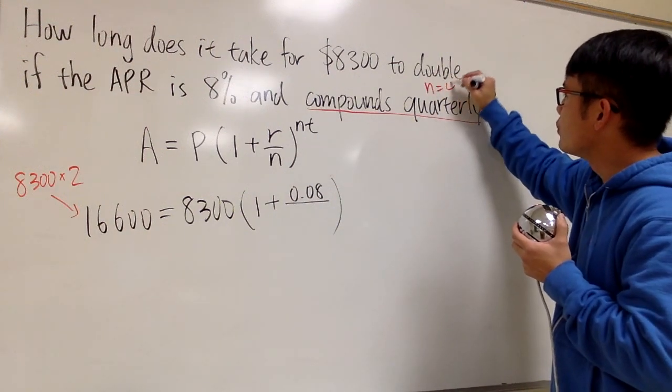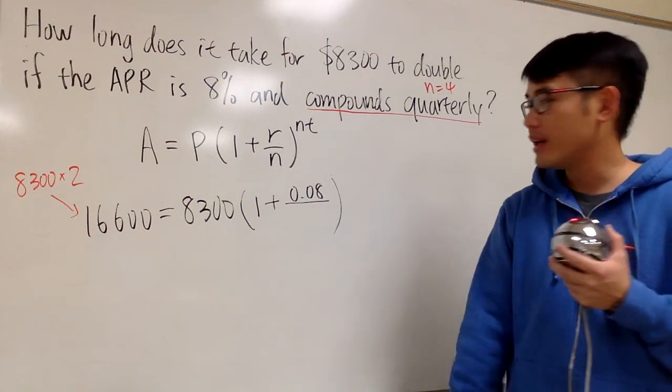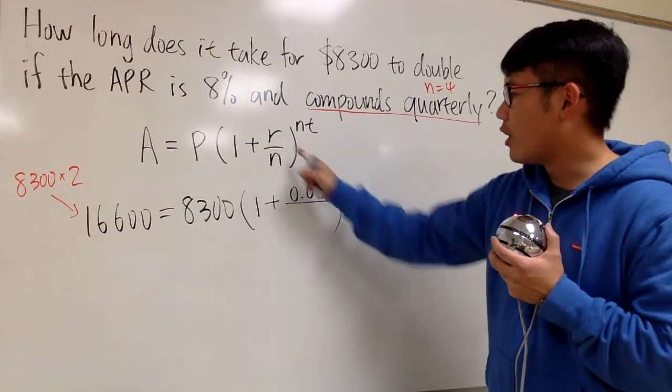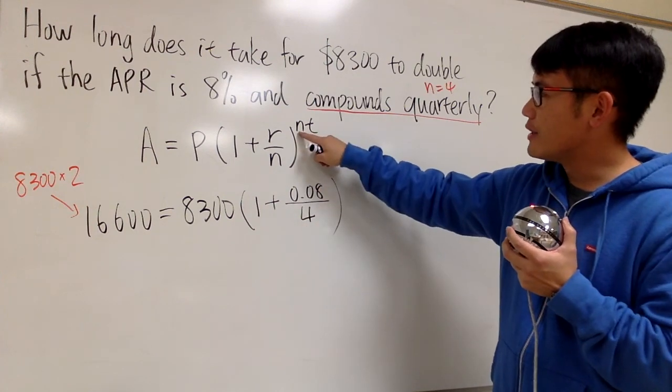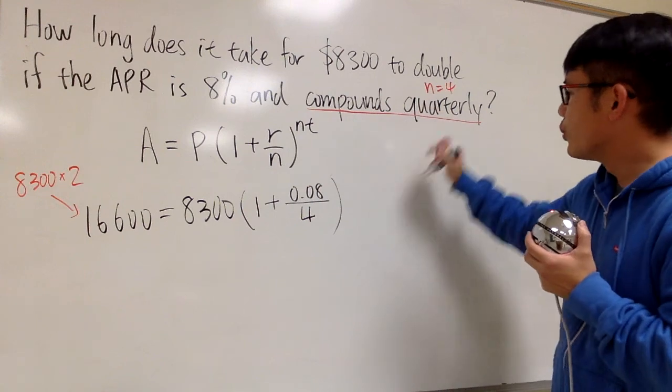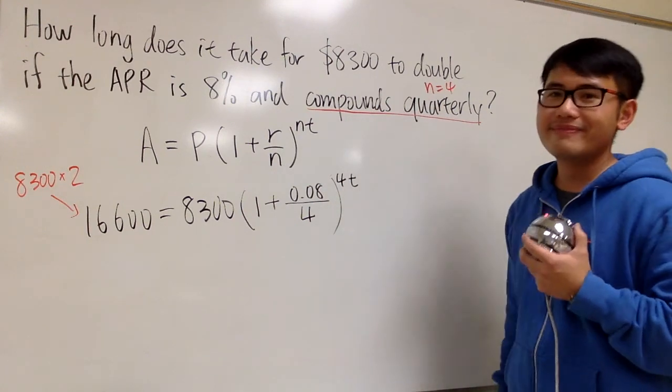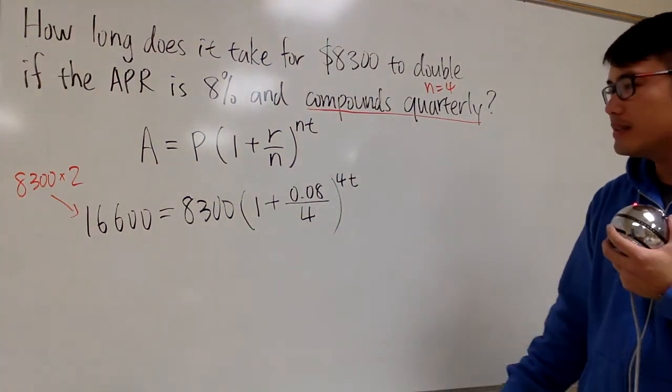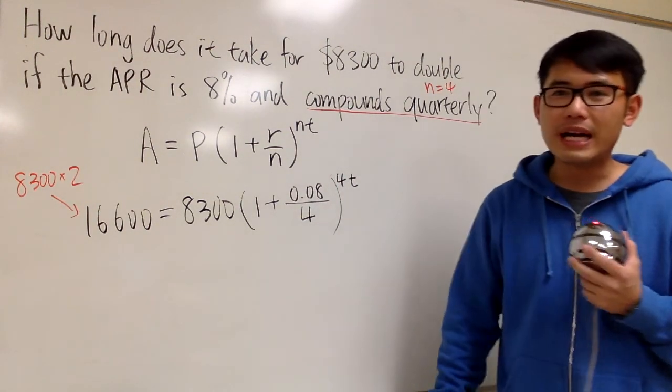That means n is equal to 4, because there are 4 quarters in one year. Therefore, I'm going to divide the R by 4, right here. And notice that for the exponent, we have nt. n is equal to 4, so we put the 4 right here. And t, we don't know. And that's exactly what we're trying to solve for. So, this right here is the equation. And now we can just go ahead and solve it.